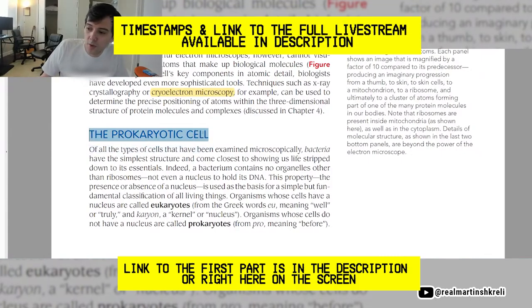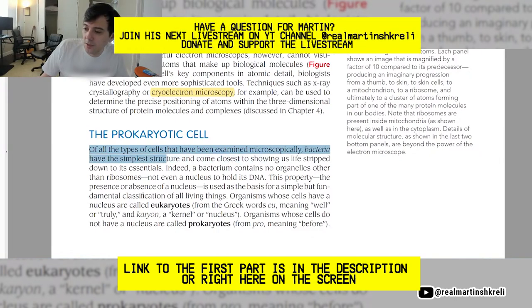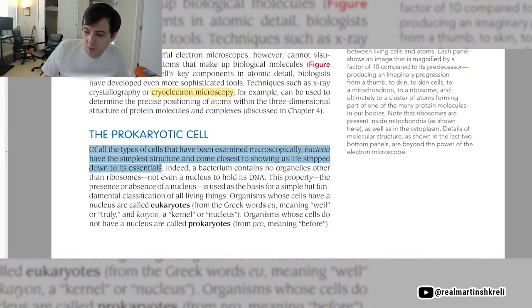Let's move on to a new section, the prokaryotic cell. Of all the types of cells that have been examined microscopically, bacteria have the simplest structure and come closest to showing us life stripped down to its bare essentials. There's this interesting experiment where Craig Venter, who was the first person to sequence the human genome, is also trying to make a new operating system for a new synthetic cell designed from scratch. This is kind of what bacteria is in the first place, but it would be interesting to see if one could create it from scratch.